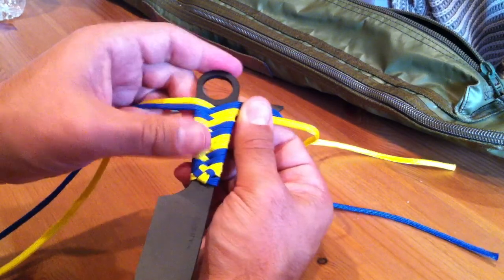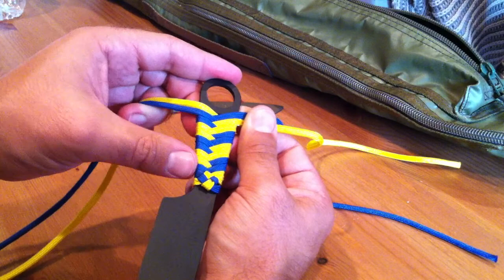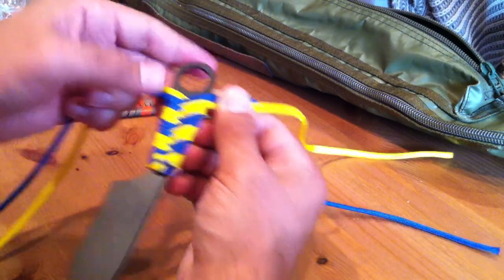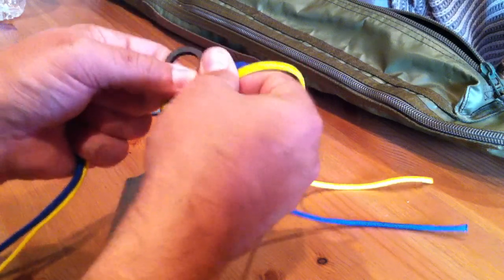Notice that it's nice and flat. There aren't any kinks in it. There aren't any loops in it or anything. It's really tight. You've really cinched it down.